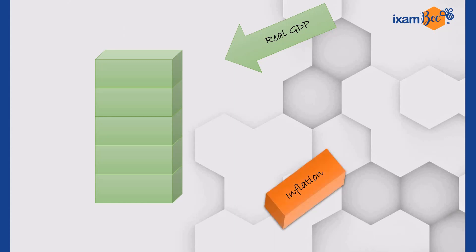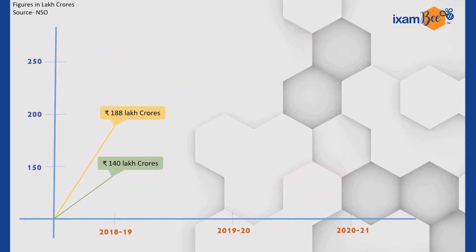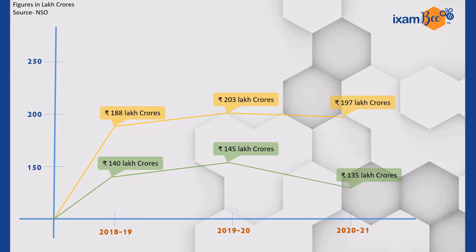Now let's have a look at India's real GDP and nominal GDP figures for the last three financial years. The figures shown here are in lakh crores, and the real GDP is calculated on the price levels of 2011–12. As you can see, the nominal GDP for the year 2020–21 stands at 197 lakh crores, whereas the real GDP stands at 135 lakh crores. The significant gap between the two denotes inflation.